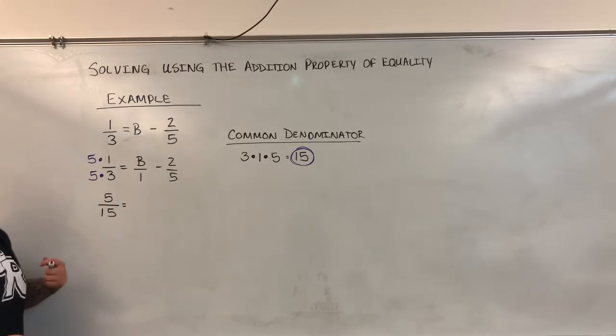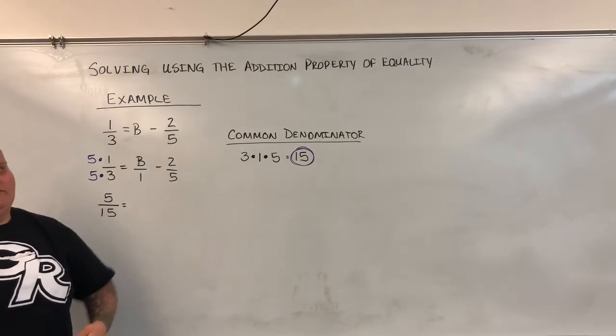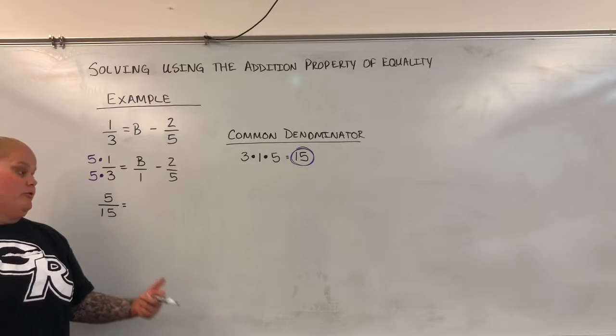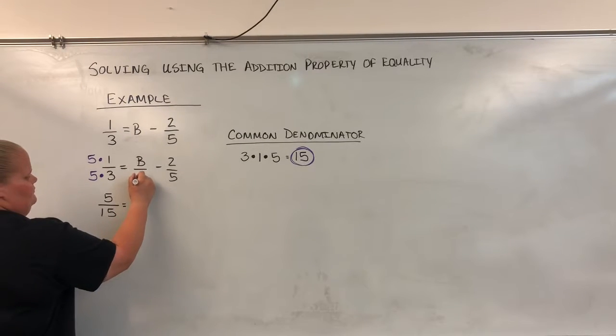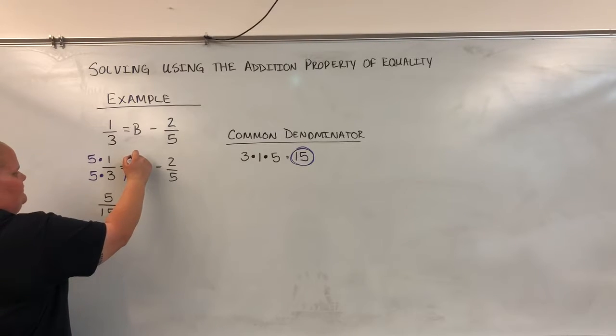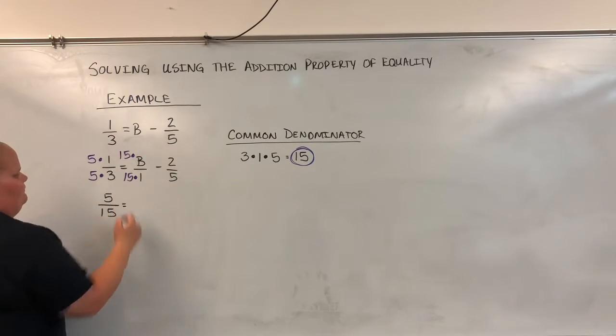Here I have a 1. How do I make 1 into 15? Well, I multiply it by 15. Again, whatever I do to the bottom, I have to do to the top. So up top, now, I'm going to have 15B. And on the bottom, I have 15.